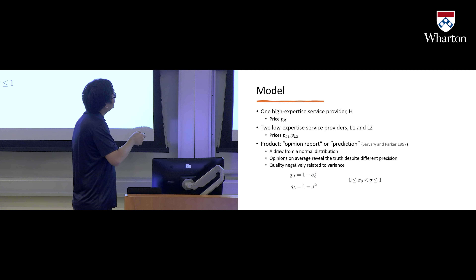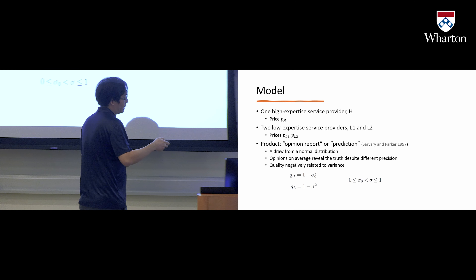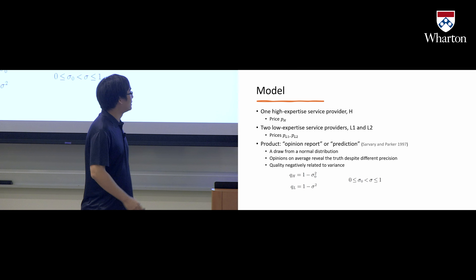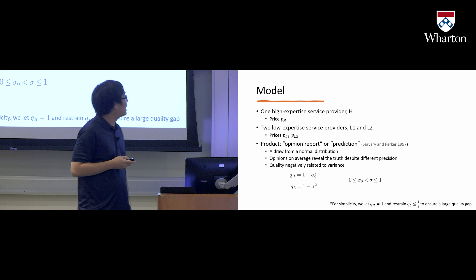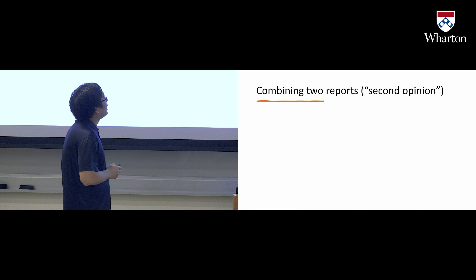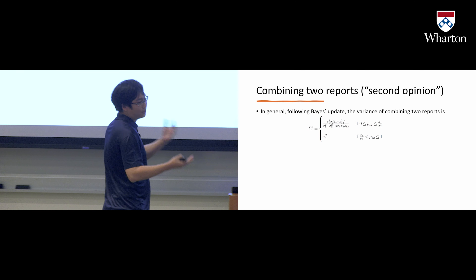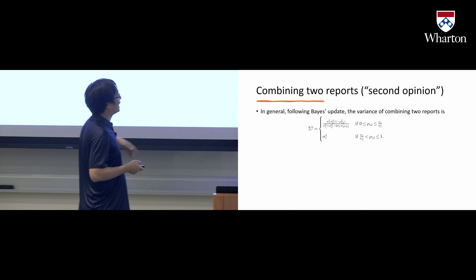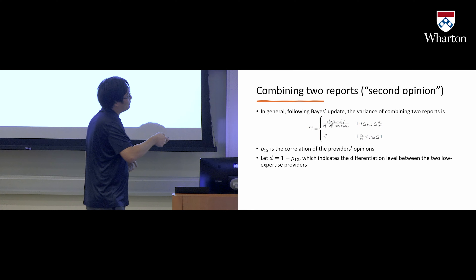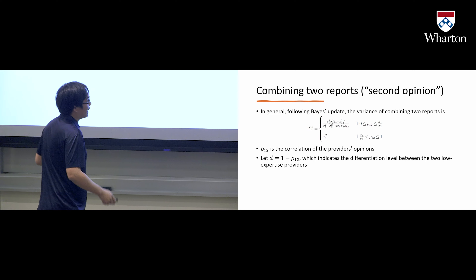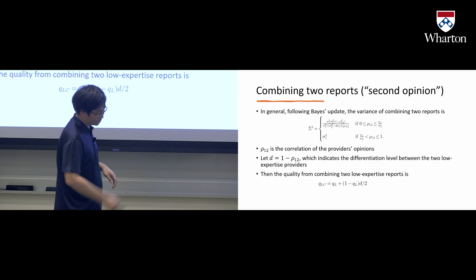We assume Q_H equals one and Q_L is less than one-fifth — a technical assumption to ensure a large quality gap. When we want to combine these two reports — that's where the second opinion comes in — we follow Bayes' rule. We let D equal one minus rho, which captures how diverse the ideas of two providers are. The quality from combining the two lower-expert reports can be given by this expression derived from Bayes' rule.